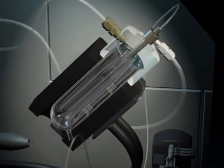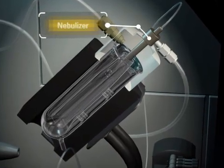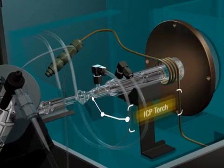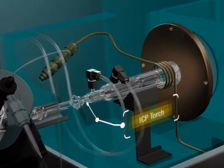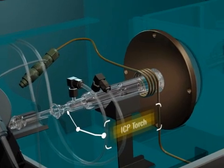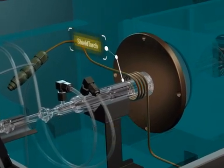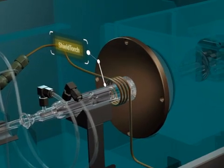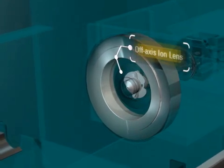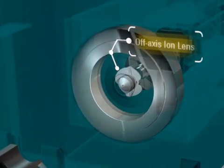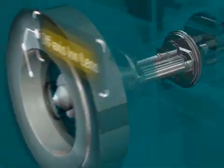The sample introduction system consists of a nebulizer, spray chamber, and ICP torch. Ion generation takes place in a high-temperature 27 MHz plasma. Agilent's unique shield torch system reduces ion energy spread, allowing optimum ion focusing and increased sensitivity. The off-axis ion lens system ensures high ion transmission across the entire mass range, plus low background noise.